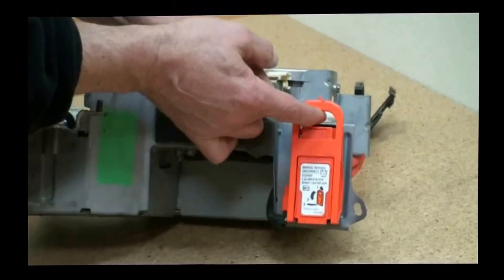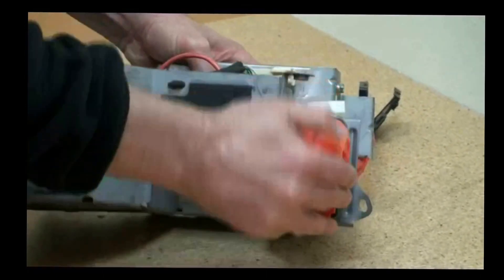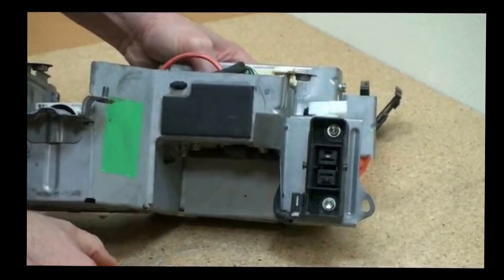So that comes out. We lift up the bale, and then we rotate this over and pull the battery disconnect out.